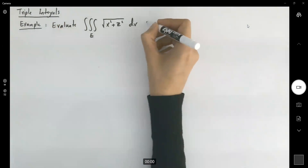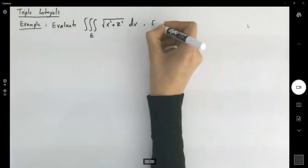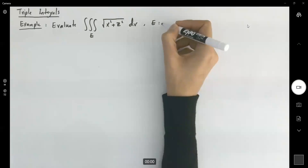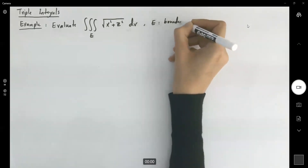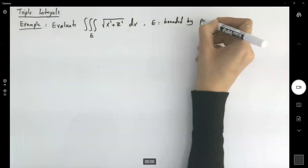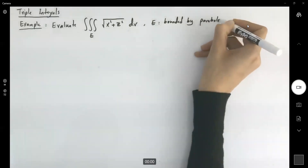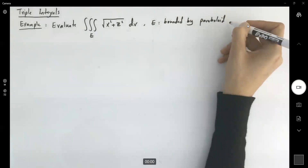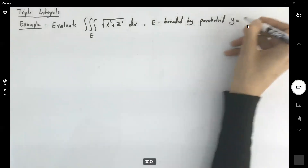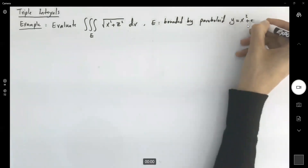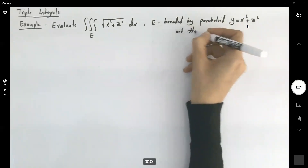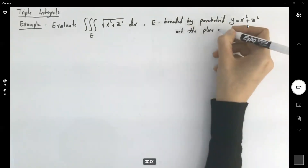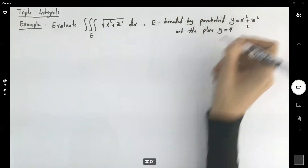The region E is bounded by the paraboloid y equals x squared plus z squared, and the plane y equals 4.